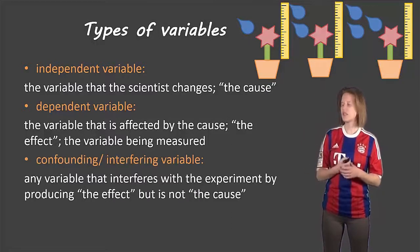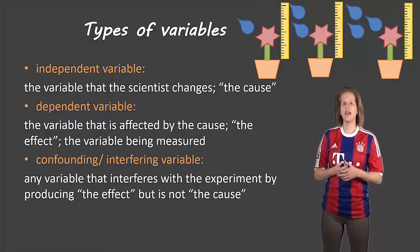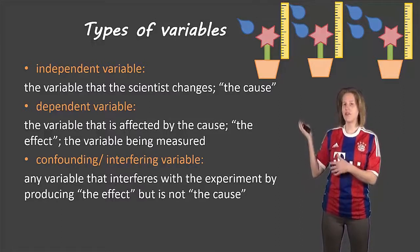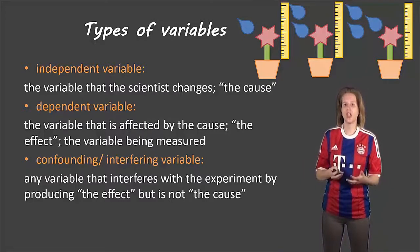And then the last type is called a confounding variable or an interfering variable and this is something that would also affect that growth of that plant but isn't actually what we're looking for, isn't what we're changing.